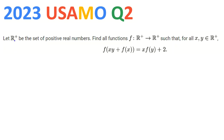So let's see what we can do here. The problem says: let ℝ⁺ be the set of positive real numbers. Find all functions f from ℝ⁺ to ℝ⁺ such that for all x, y in ℝ⁺, the equation holds. Here we'd like to replace x or y with 0, but we cannot, because we can only use positive real numbers.